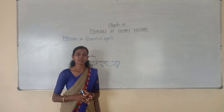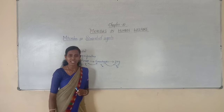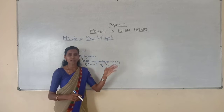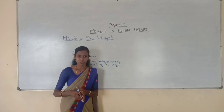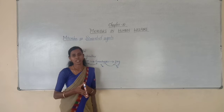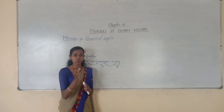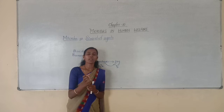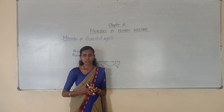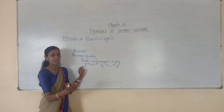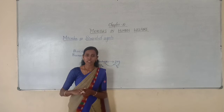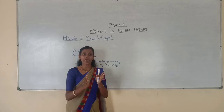That is why scientists have discovered various biological controlling agents to control these pests and pathogens. In order to overcome all these disadvantages, it is better to use biological control agents instead of using chemicals. One important thing to note: by using biological controlling agents, we are not completely eradicating the pests or pathogens. We are keeping them at manageable levels.